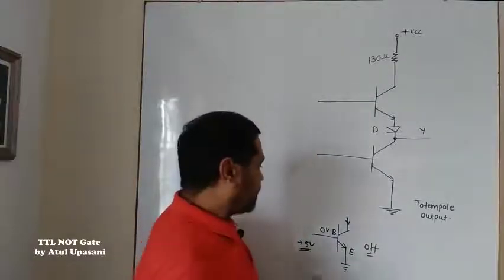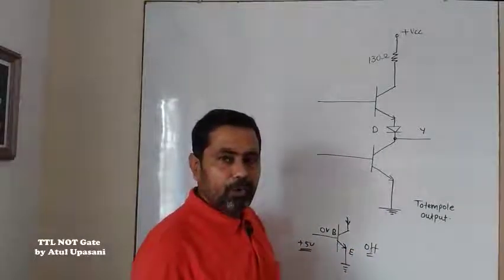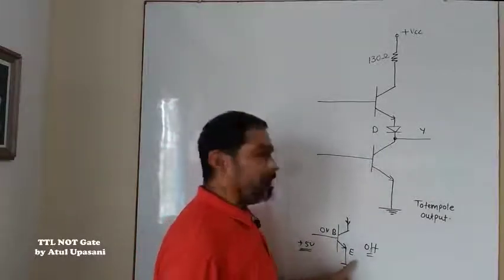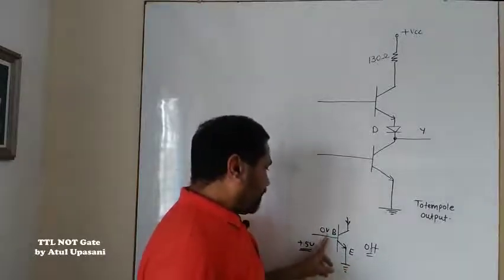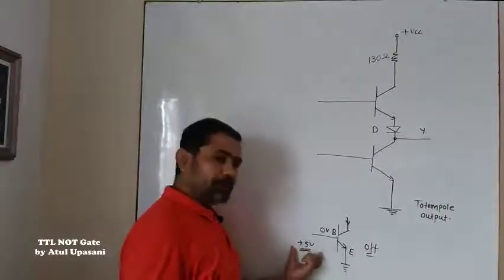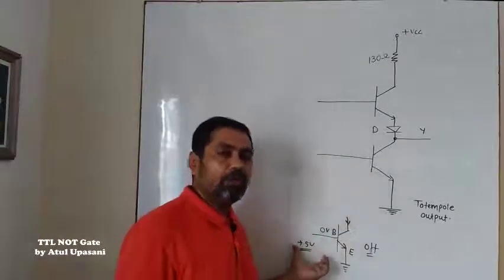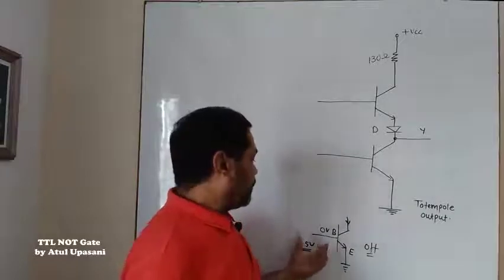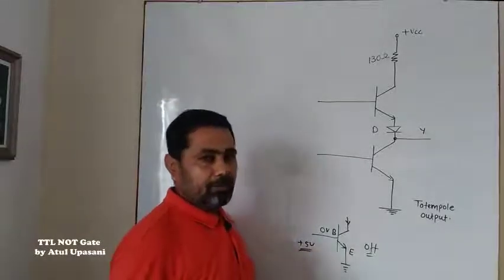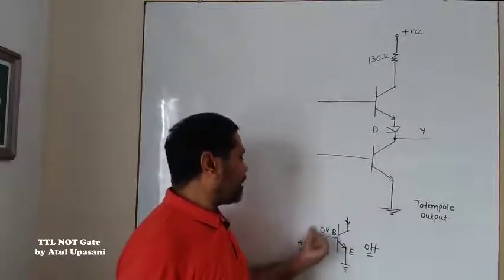The second condition: if the transistor's base-emitter voltage is more than 0.7 volts — because transistors are made up of diodes and diodes require 0.7 volts to become forward biased — then the diode will start conducting. We are inputting plus 5 volts because in digital circuits, logic levels are used: logic 1 is plus 5 volts and logic 0 is 0 volts.